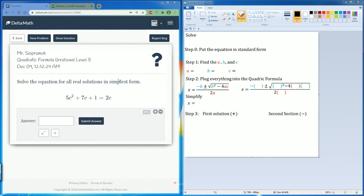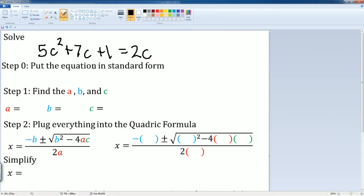We'll start by writing down the polynomial. Here I have it as 5c squared plus 7c plus 1 is equal to 2c. All right, so step one is to put it in standard form. So to do that, I have to subtract the 2c to both sides, leaving me with 5c squared plus 5c plus 1.